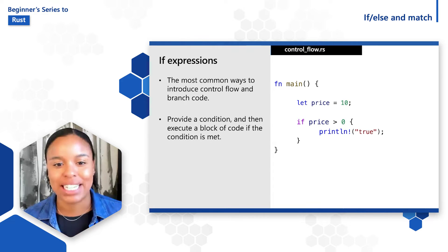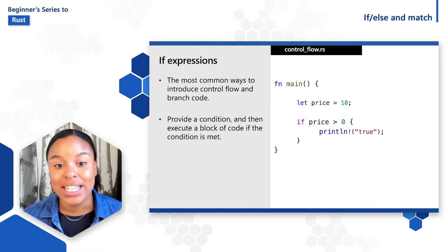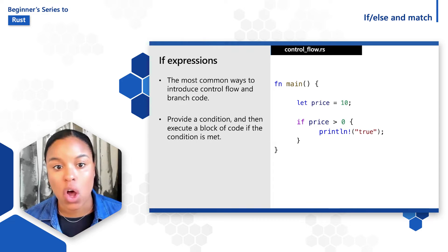A common example is a condition around a value. For example, if price is greater than zero, then we can print true as output. Notice that the expression starts with the keyword if and is followed by a condition which always evaluates the Boolean type with the value true or false. This if expression evaluates to true.